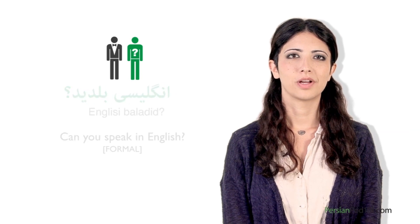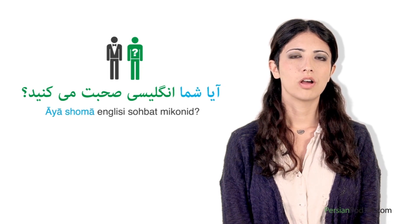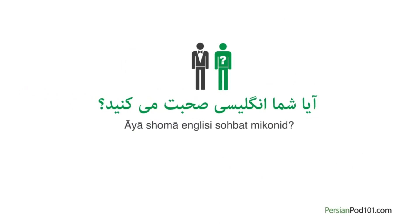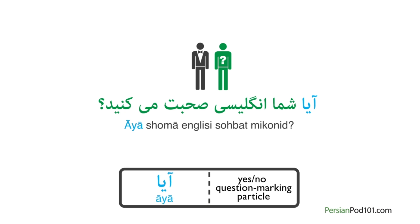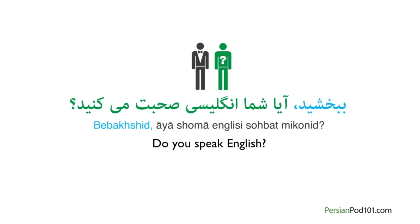We're going to make this sentence more polite. By simply adding 'id' to 'balad' instead of 'i,' it becomes a slightly more formal question: 'Ingilisi baladid?' But it's always a good idea to be as polite as possible when addressing strangers. Here's the most polite form. 'Ayah' is a question word used at the start of sentences to turn a regular sentence into a yes or no question: 'Ayah shoma ingilisi sohbat mi konid?' means 'Do you speak English?' By adding 'bebekhshid,' or excuse me, the sentence becomes even more polite.